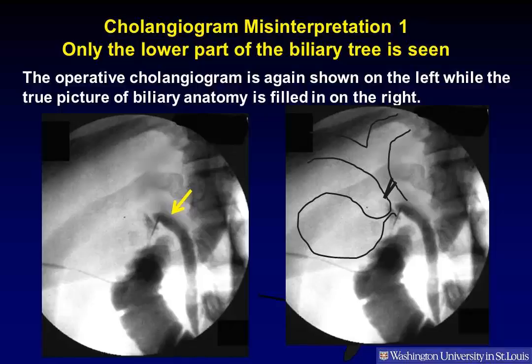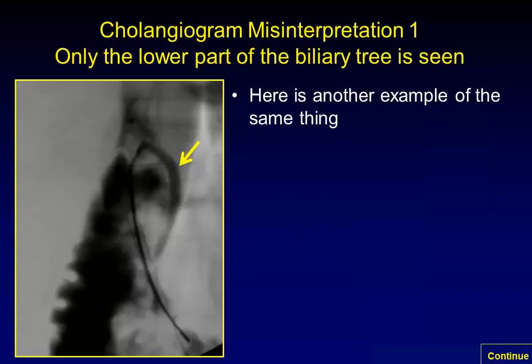The operative cholangiogram is shown on the left while the true picture of biliary anatomy is filled in on the right. Here is another example of the same thing — only the lower part of the biliary tree is seen. Remember, this almost always means that the common bile duct has been cannulated rather than the cystic duct. Do not clip or cut this structure, as it is probably the common bile duct.